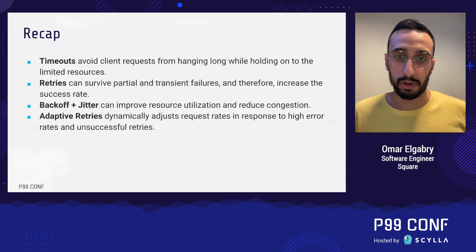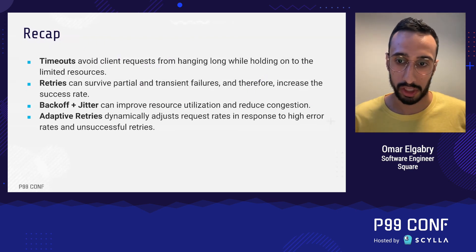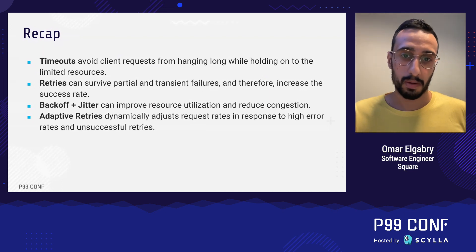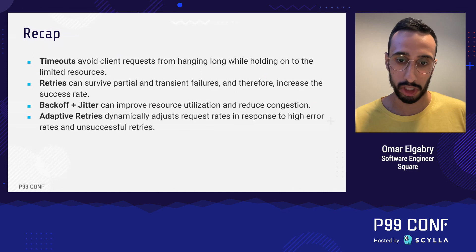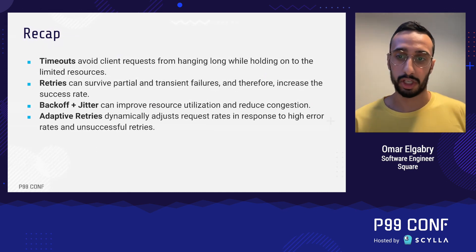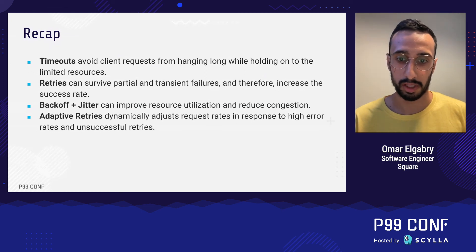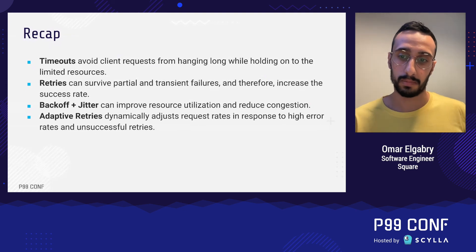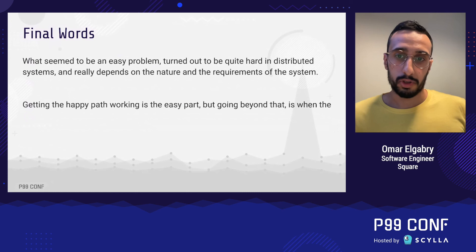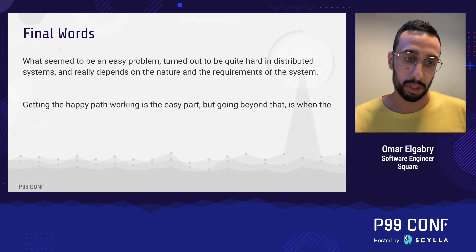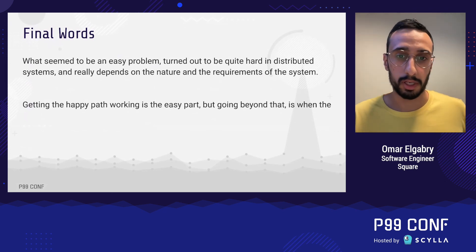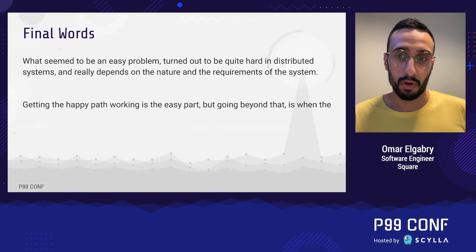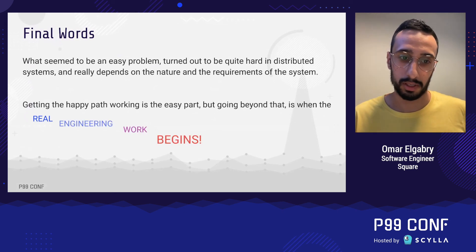To recap: timeouts avoid client requests from hanging long while holding onto limited resources. Retries can survive partial and transient failures and increase the success rate. Backoff and jitter improve resource utilization and reduce congestion. Adaptive retries dynamically adjust the request rate in response to higher error rates and unsuccessful retries. These techniques, when applied properly, yield huge returns — but when applied blindly, they can cause wide-ranging problems including a complete outage. What seemed like an easy problem turns out to be quite hard in distributed systems, and getting the happy path working is the easy part — going beyond that is when the real engineering work begins. Thank you.